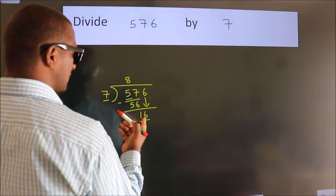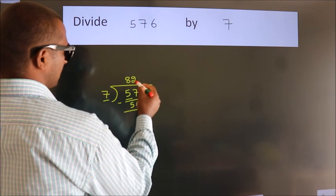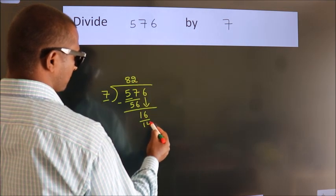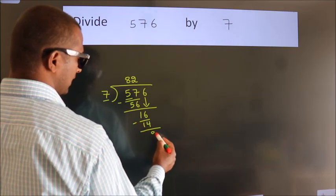A number close to 16 in the 7 table is 7 times 2 is 14. Now we subtract. We get 2.